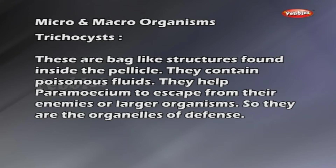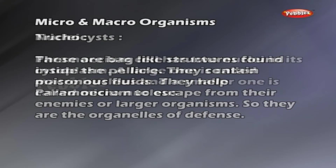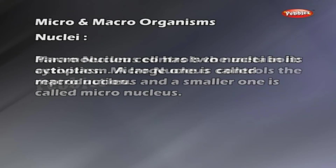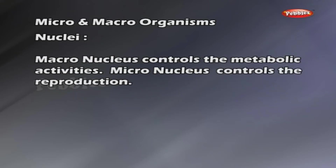Cytoplasm: the liquid present inside the pellicle is called cytoplasm. It is divided into outer ectoplasm and inner endoplasm. Trichocysts are bag-like structures found inside the pellicle. They contain poisonous fluids and help Paramecium escape from enemies — they are the organelles of defense. The Paramecium cell has two nuclei: a large macronucleus and a smaller micronucleus. The macronucleus controls metabolic activities; the micronucleus controls reproduction.